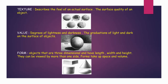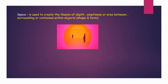Form — objects that are three-dimensional and have length, width and height. They can be viewed by more than one side. Forms take up space and volume. Space is used to create the illusion of depth, emptiness or area between, surrounding or contained within objects, shape and form.